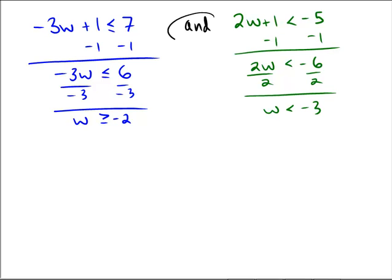And our connector word is the word AND. Okay, so what do these look like on a number line? w bigger than or equal to negative 2 would mean I'd go to negative 2. And we would go to the right, so bigger than or equal to negative 2.